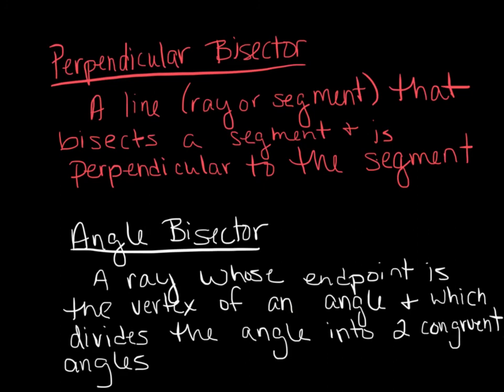Our last two terms to recall are perpendicular bisector, a line, ray, or segment that bisects a segment and is perpendicular to the segment. And angle bisector, a ray whose endpoint is the vertex of an angle and which divides the angle into two congruent angles.